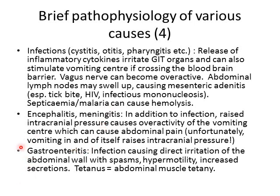A direct infection of the gastrointestinal tract can cause abdominal pain with direct irritation of the abdominal wall, leading to spasms, increased bowel movements, and increased secretions causing diarrhea. Tetanus is relatively rare these days, but it can cause tetany of all abdominal musculature along the GIT, causing abdominal pain.